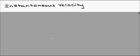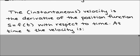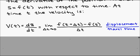Instantaneous velocity. We have talked about this before. And we do have some formulas for that. You can see that the instantaneous velocity is the derivative of the position function, S equals f(t), with respect to time. So it is the first derivative. At time t, the velocity is V(t) equals dS/dt, which is equal to the limit, as the change in t is approaching zero, of f(t + Δt) minus f(t) over Δt. So this is saying displacement or how far you've gone over travel time. So distance over time.